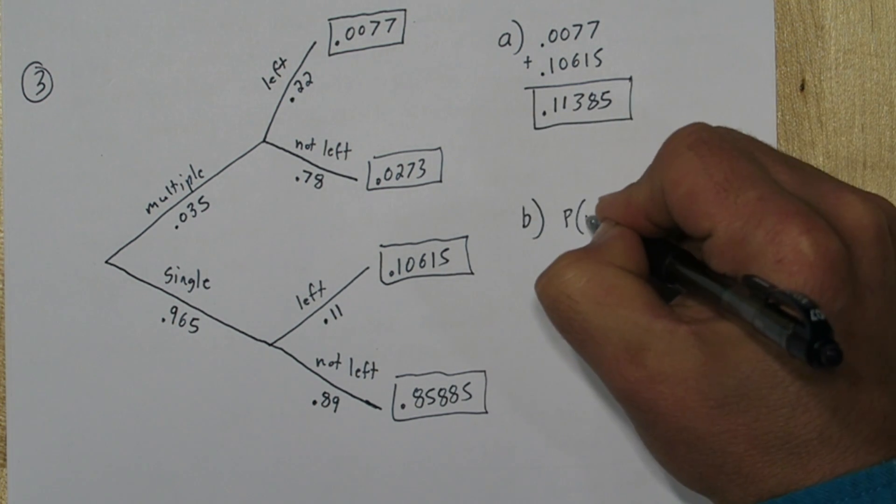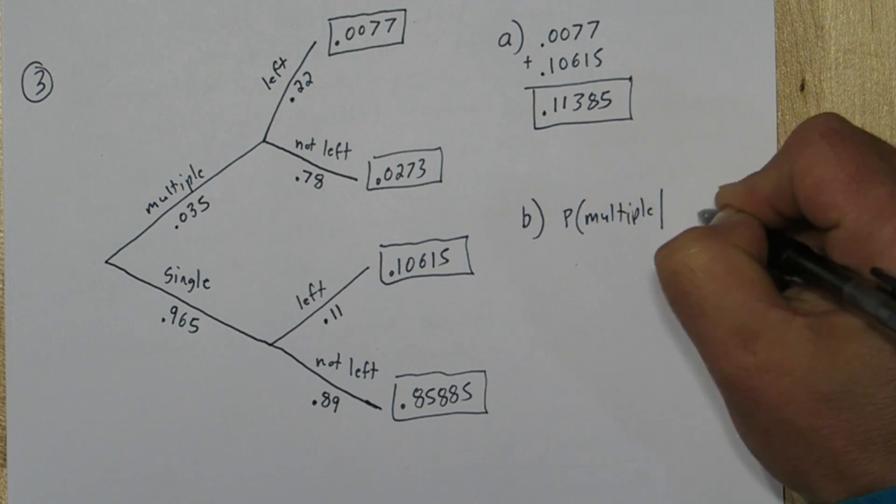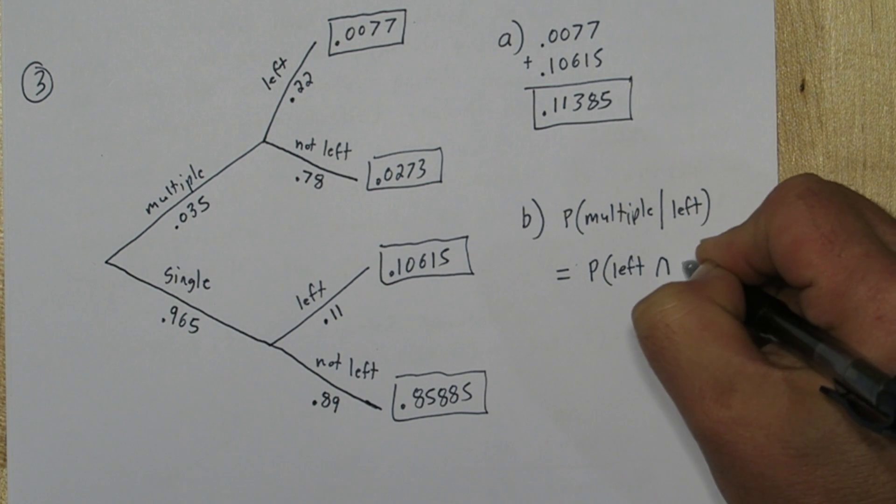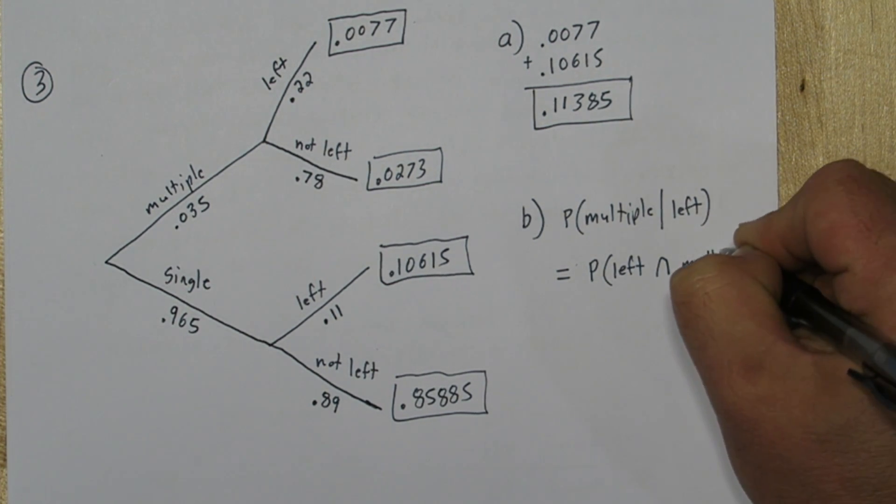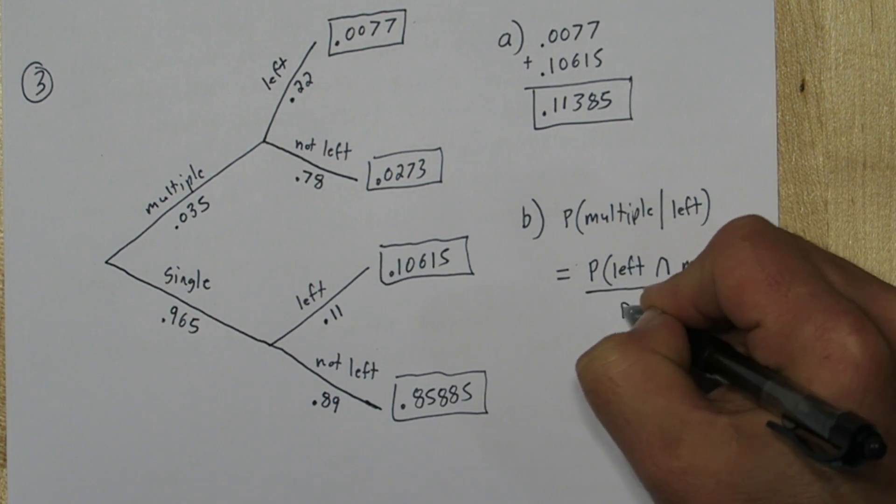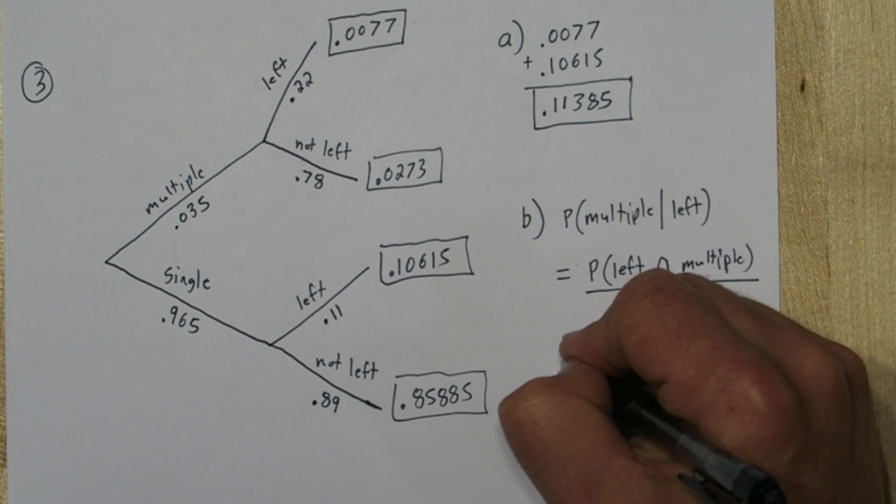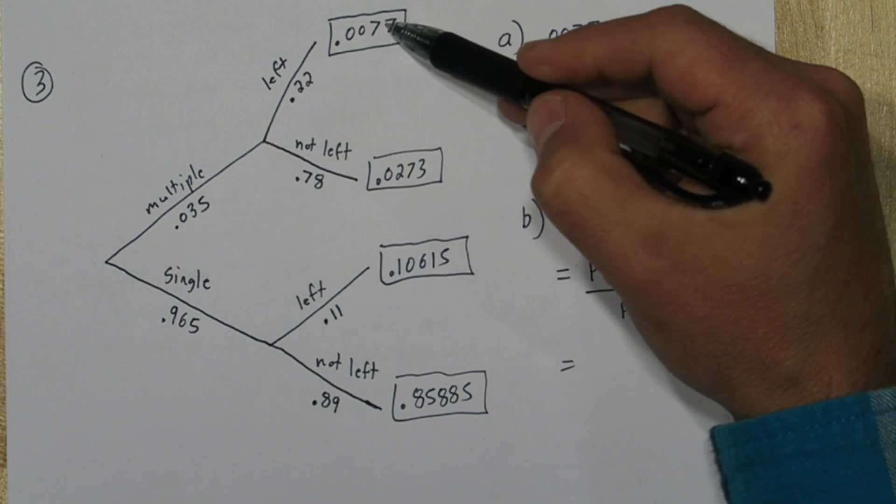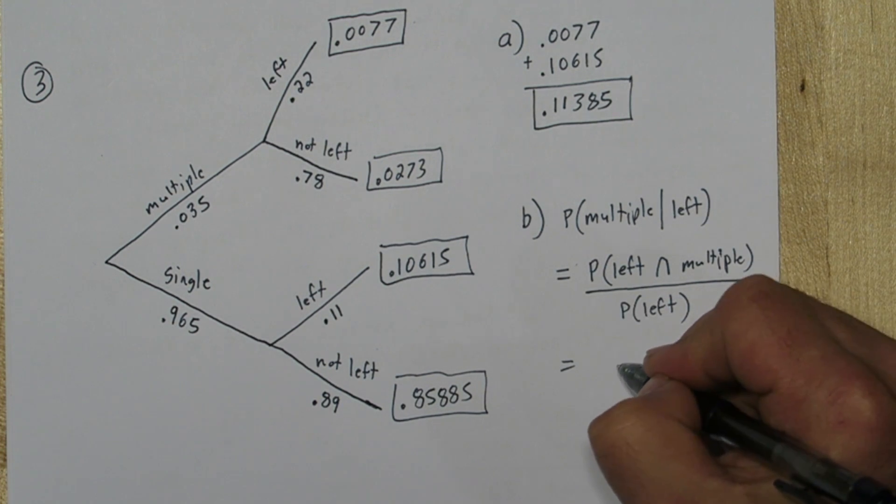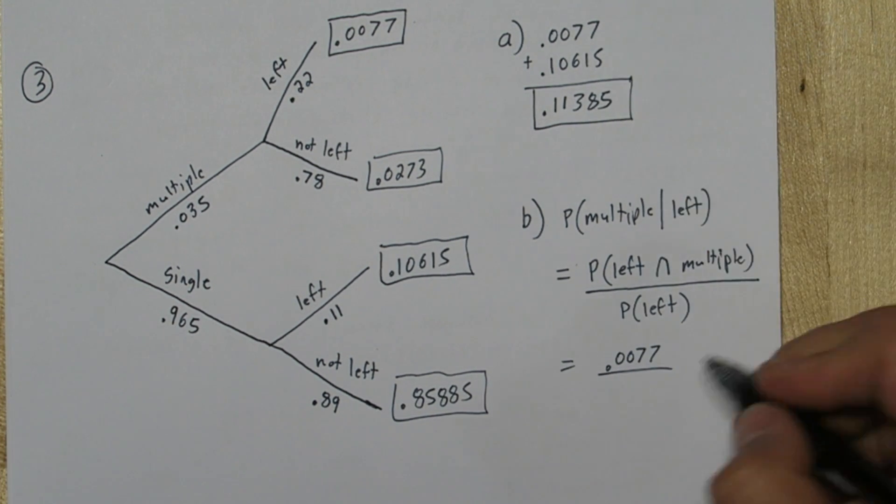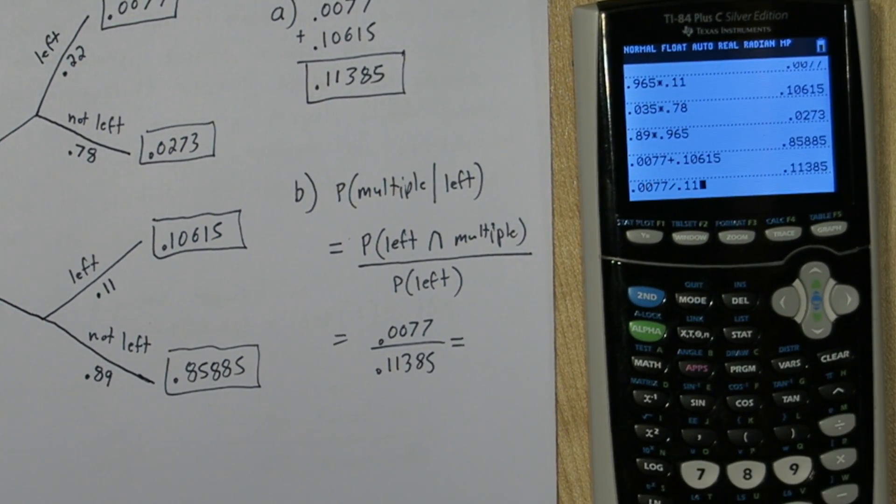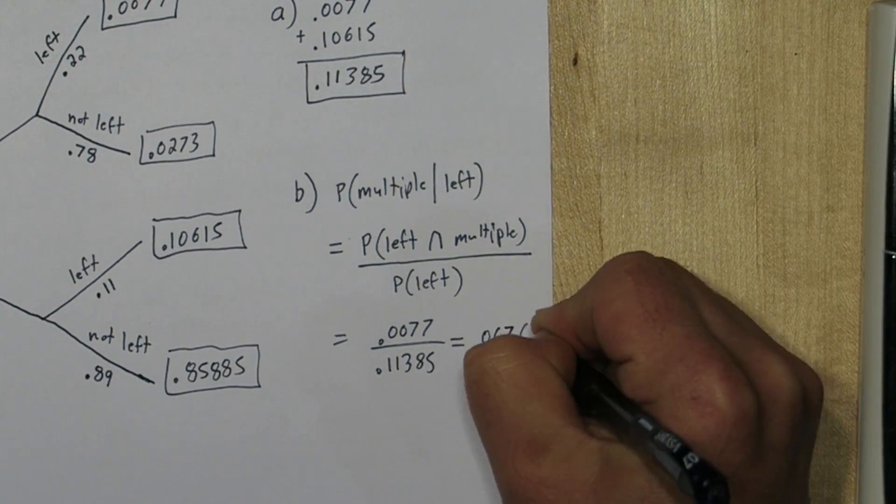Now for part B we're trying to find the probability of multiple given they are left. And we actually have this formula on the formula sheet. It's going to be the probability of left and multiple divided by the probability of left. So we can use our tree diagram. The probability of left and multiple is 0.0077. And the probability of left is what we found in part A. So I got about 0.0676.